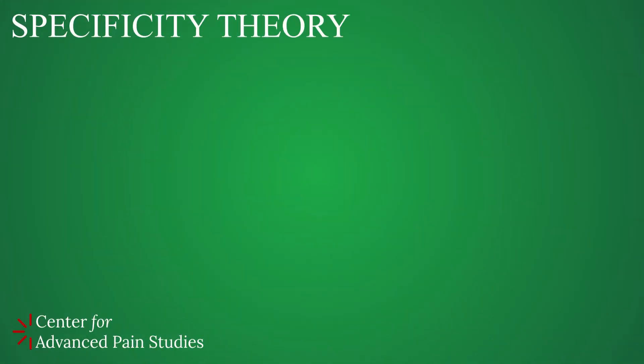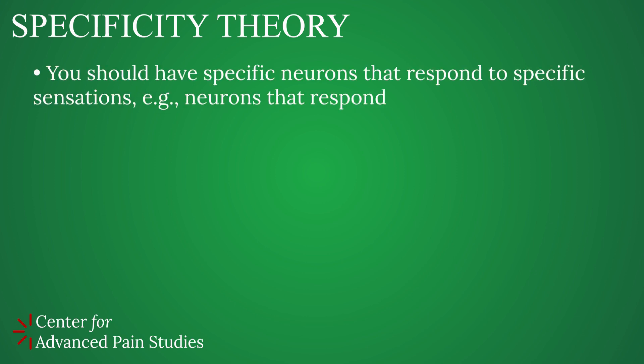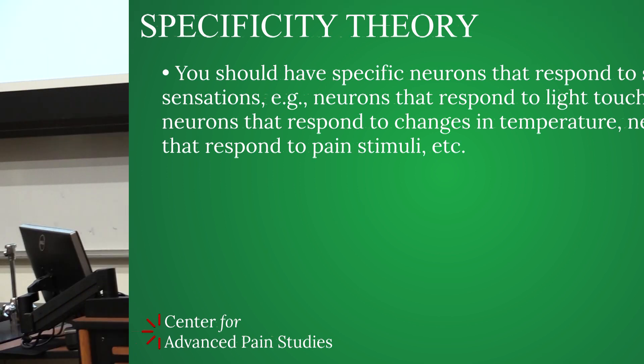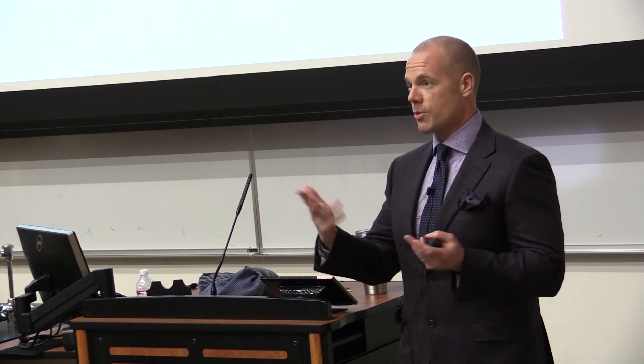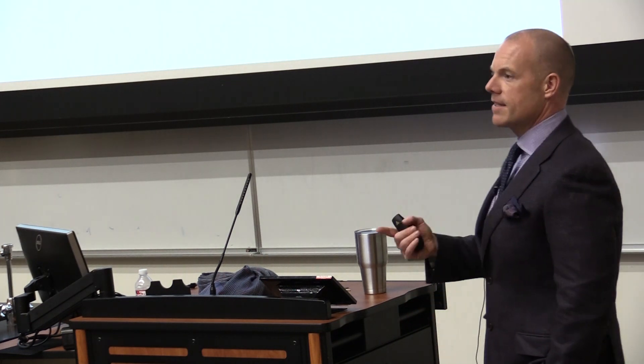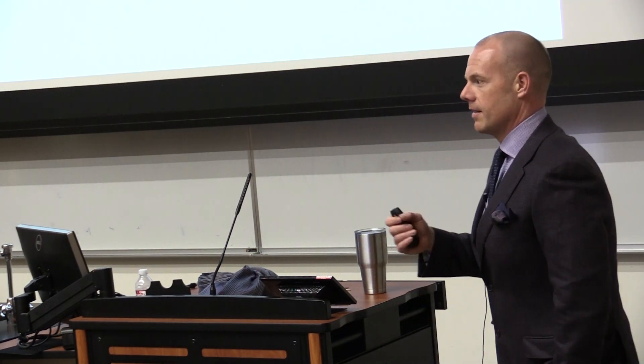So what does that mean? That means you should have neurons that respond specifically to light touch. You should have neurons that respond specifically to temperature or changes in temperature — heating or cooling. You should have neurons that respond specifically to prurigens, so things that cause itch, like histamine, etc., which we'll talk about somewhat in this class. And also neurons that respond to pain stimuli, which were theoretically called nociceptors. But it was really in the 60s and 70s, the work of Ed Perl, that figured this out.